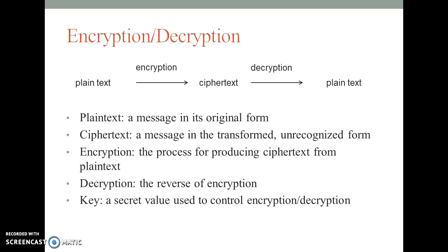Encryption and Decryption: Plain text is a message in its own form, which is then encrypted into ciphertext — a message in its transformed, unrecognized form. Encryption is the process for producing ciphertext from plain text. Decryption is the reverse of encryption. A key is a secret value used to control encryption and decryption.